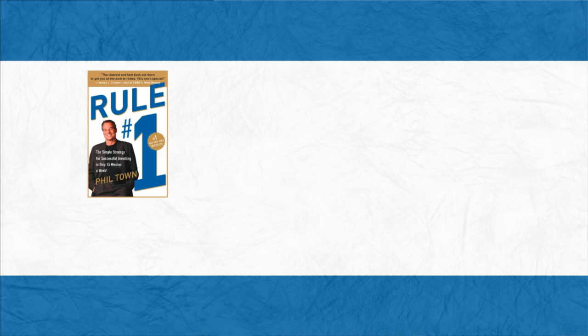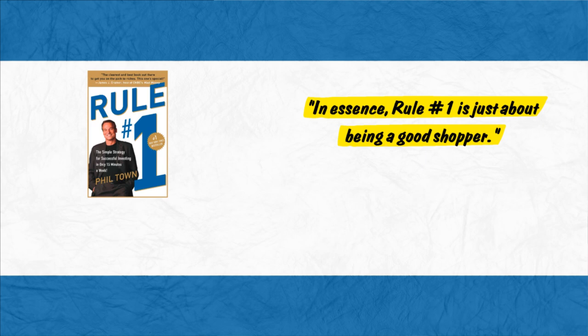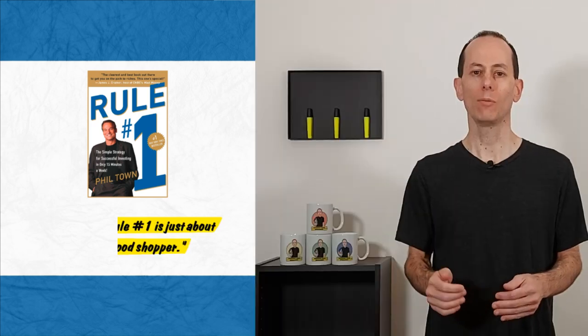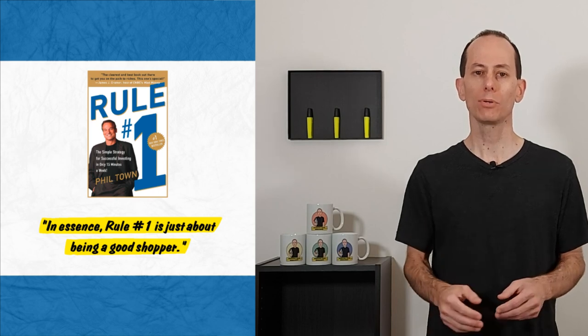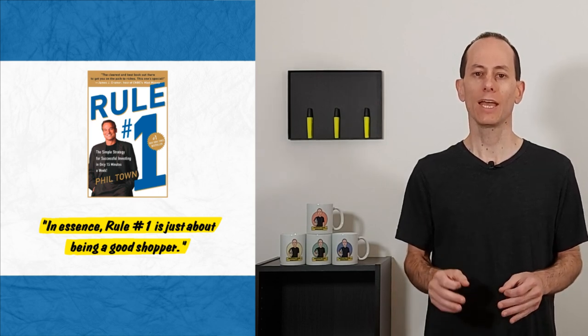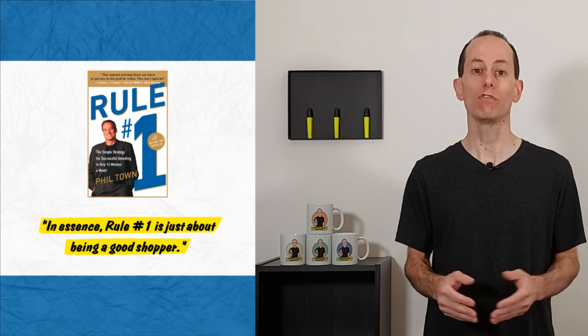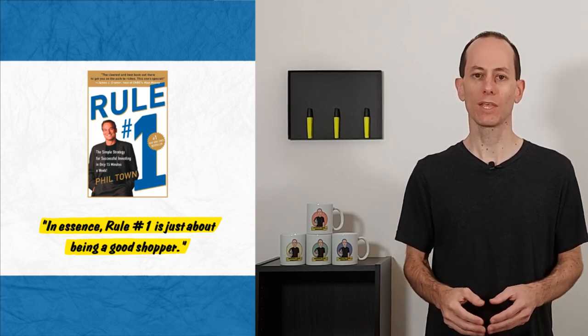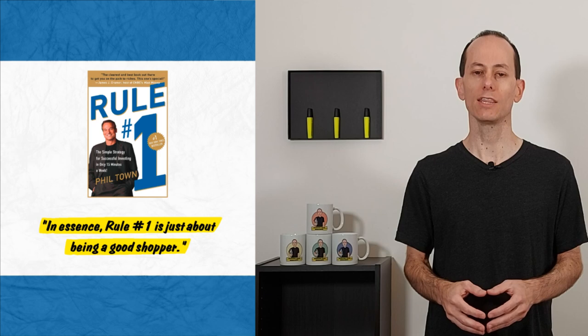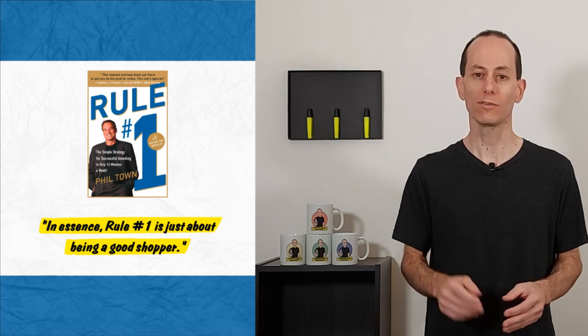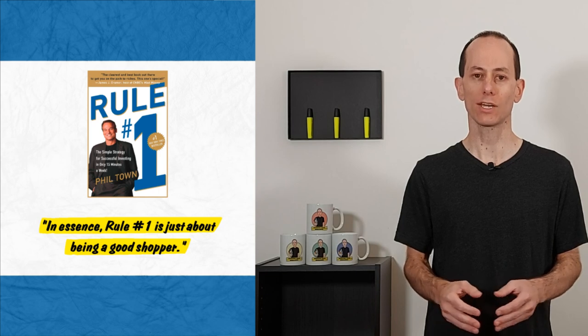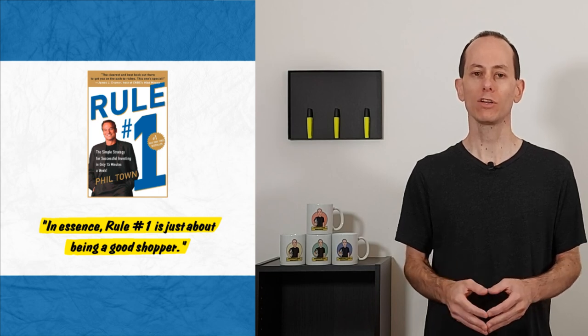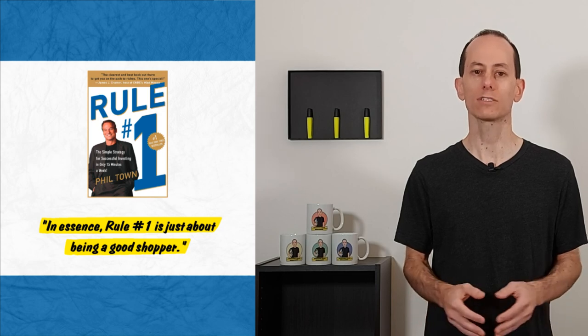The first highlight is on page 35. In essence, Rule 1 is just about being a good shopper. I'm reminded of this highlight when I shop for washing machine liquid. The bottle I purchase costs $10, and every month or two it goes on sale for $5. That's when I load up the trolley, and that's how I want to invest in the businesses I follow when they're on sale. I hate it when I run out of liquid and buy a bottle when it's not on sale. That's also how I'd feel if I invested in companies when they're not on sale.